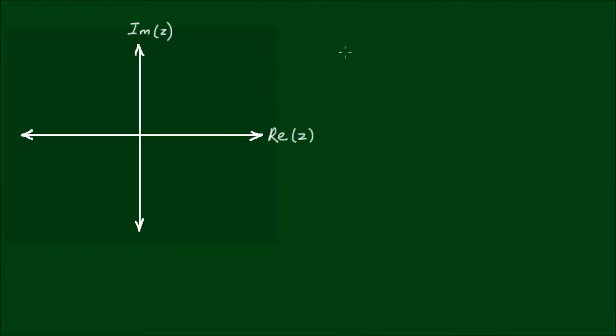Alright, let's do an example. Let's write z is equal to the square root of 3 minus i in modulus argument form.